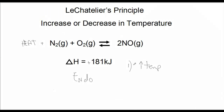In the second case, let's remove heat — decrease the temperature. Imagine putting ice around the beaker to cool down the environment around the reaction. We would be removing heat, taking heat away from the system. That would cause the reaction to shift to the left.